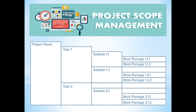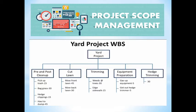Here is an example of a WBS, or work breakdown structure. We have the yard project WBS. As you can see, there are five main tasks in the yard project, and each has subtasks, which makes the project run smoothly because you know what to do for each task.